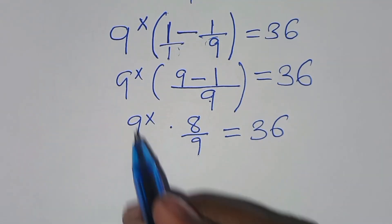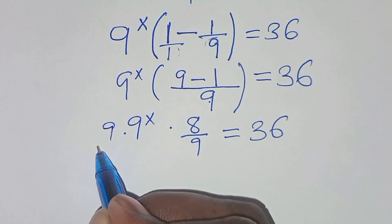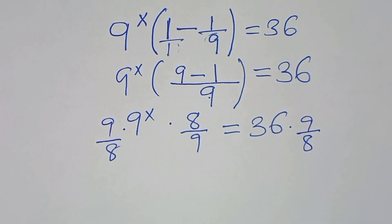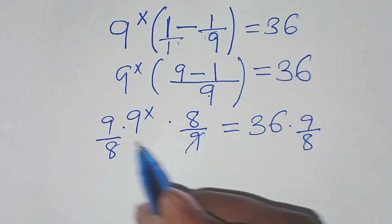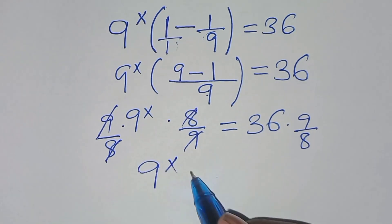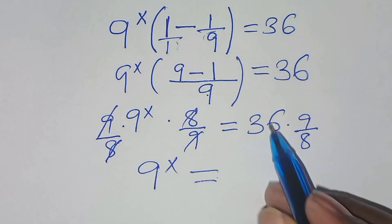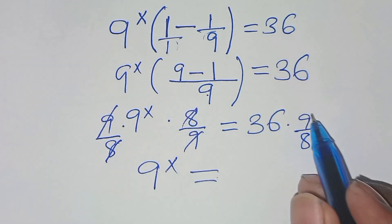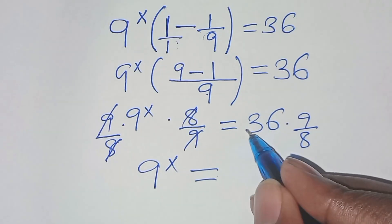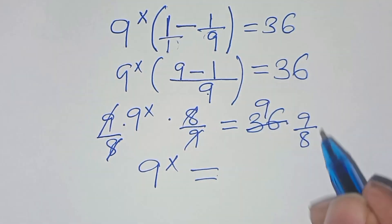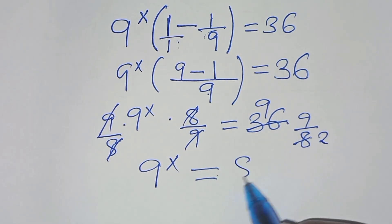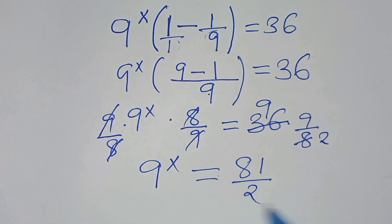The next step is to multiply both sides by 9 over 8. Let's simplify here, so that now we have 9 to the power x is equal to 36 times 9 over 8. We can simplify this: 36 divided by 4 is 9, and 8 divided by 4 is 2. So 9 times 9 is 81 over 2.